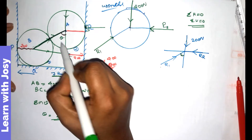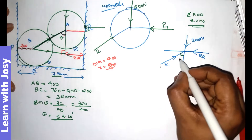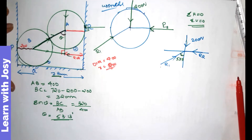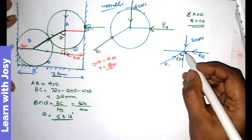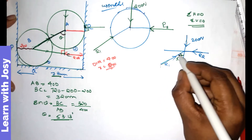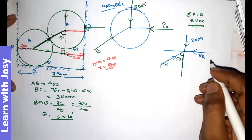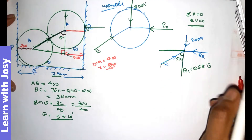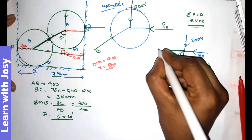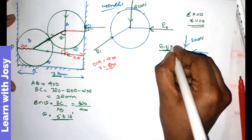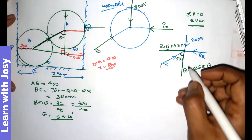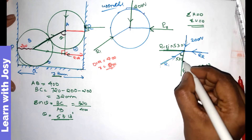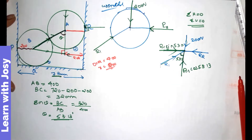So sin theta equals 320 divided by 400, giving theta equal to 53.13 degrees. This reaction line is pushed towards the vertical and the direction is 53.13 degrees. Now we resolve this: the horizontal component is R1 cos 53.13 and the sine component is R1 sin 53.13.